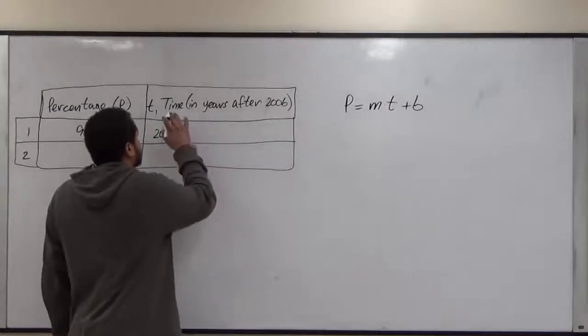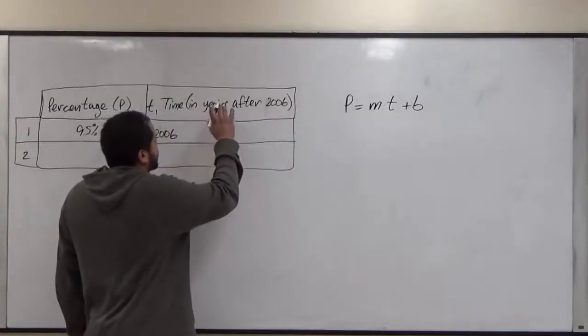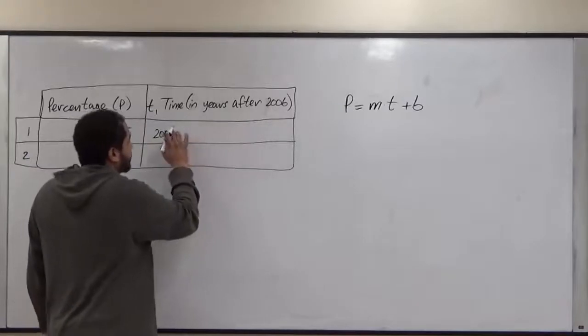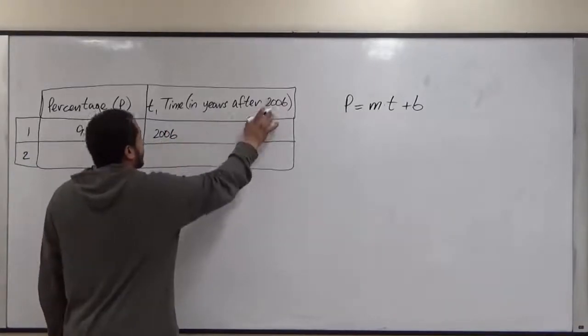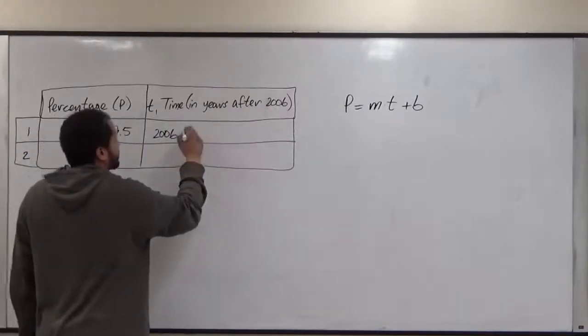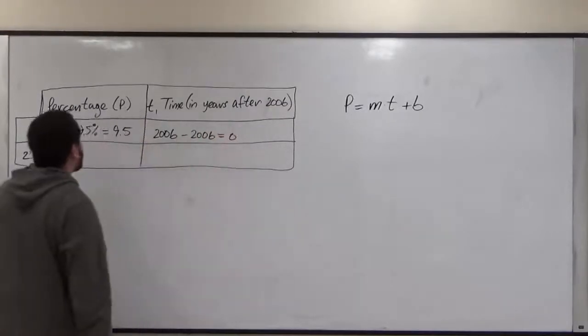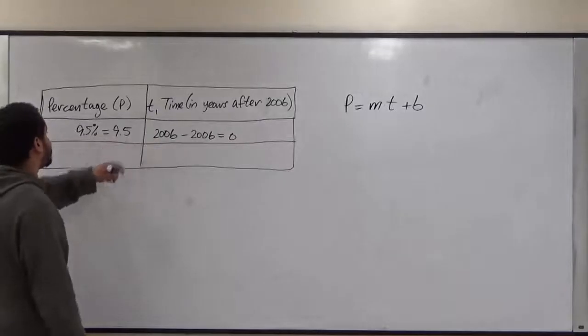One thing to keep in mind is that the T, the time in years, are the time in years after 2006. So we're going to take the difference between each year and 2006 to determine the T value. Here we're going to subtract 2006 and we get zero. So here our T is zero and our P is 9.5.